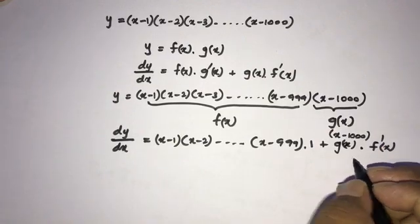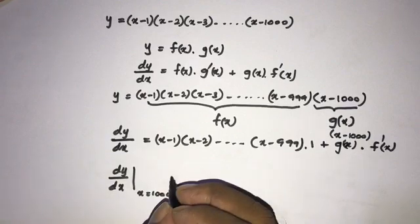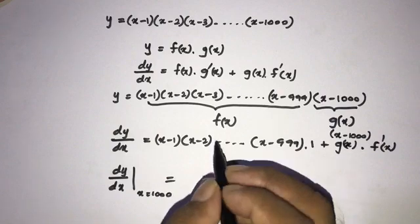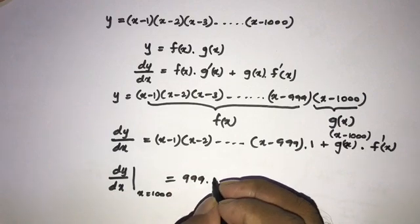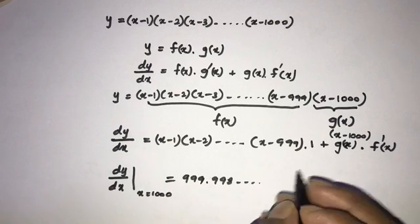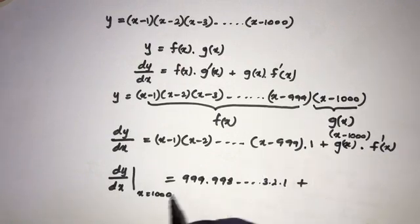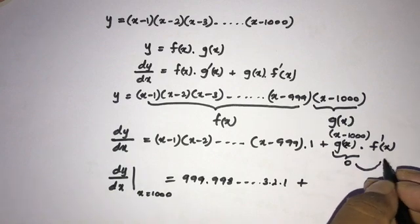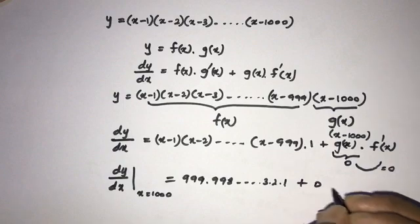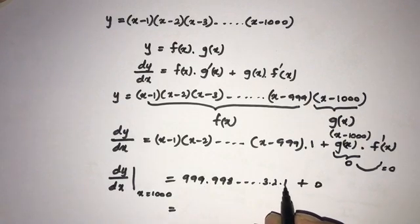Now we need to find the first derivative when x equals 1000. Plugging in: the first term gives (999)(998)···(3)(2)(1). For the second term, (x-1000) becomes zero, so the entire second term is 0. Therefore we have 999 × 998 × ··· × 1, which is 999 factorial.